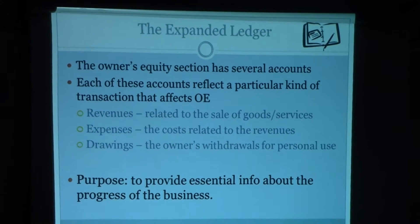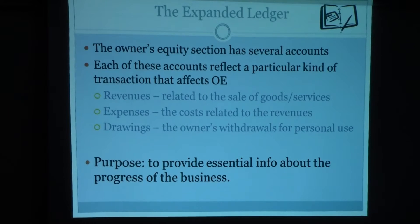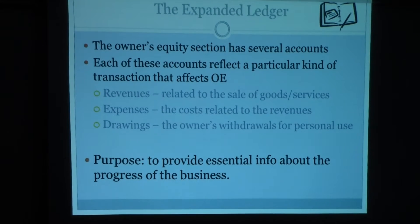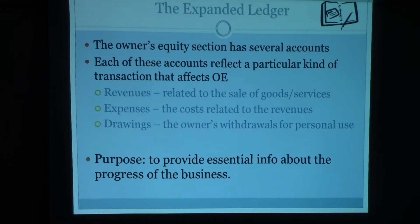What is the expanded ledger? The expanded ledger — as you may recall, the first ledger you looked at was for the balance sheet, which has assets, liabilities, and equities. In the expanded ledger, we take the equities, which is the owner's capital account, and expand it further into several types of accounts. The revenues, expenses, and drawings accounts are the expansion from the owner's equity account. These three types of accounts were previously assumed to be part of the capital account; from now on, they will be listed separately.